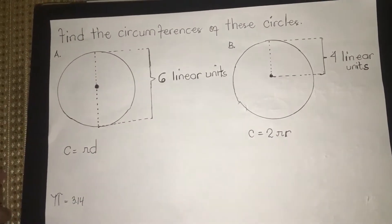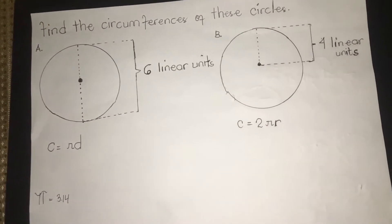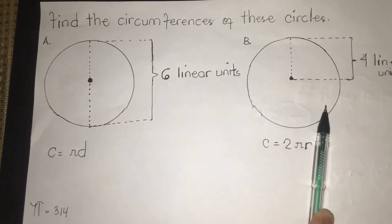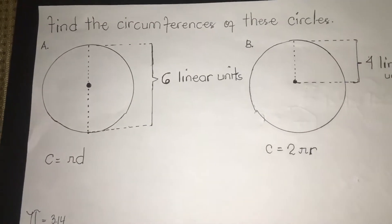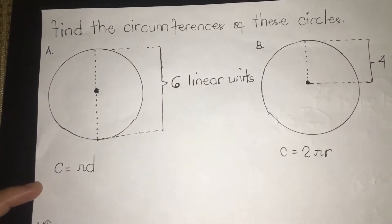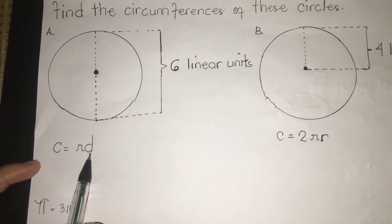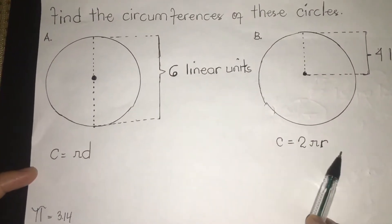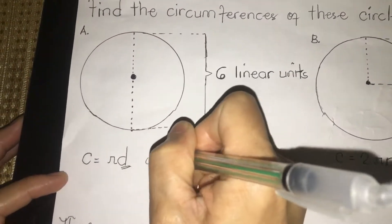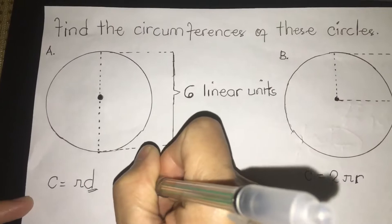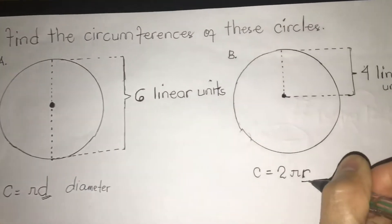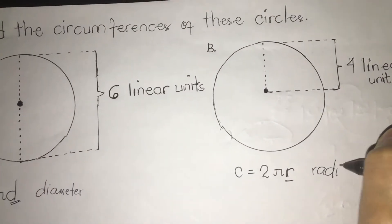Today we are going to discuss how to find the circumferences of these two circles. We have the formula C equals pi D, and C equals 2 pi R. D stands for diameter and R stands for radius.